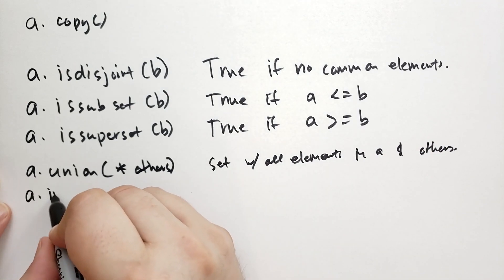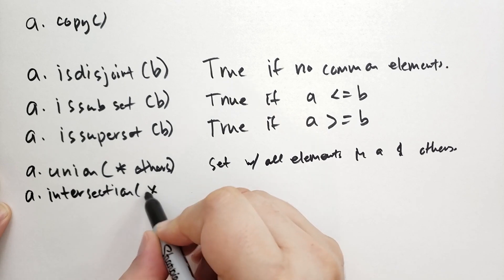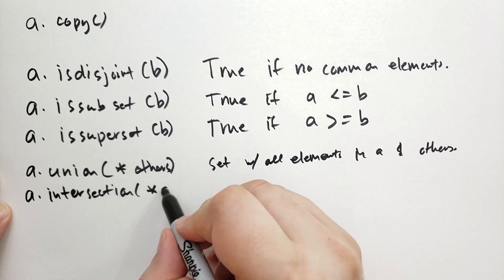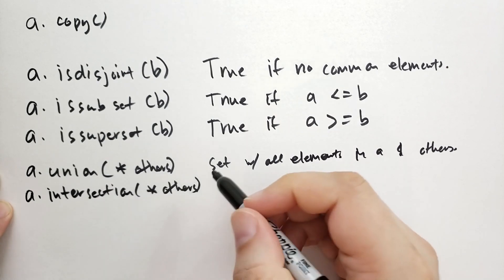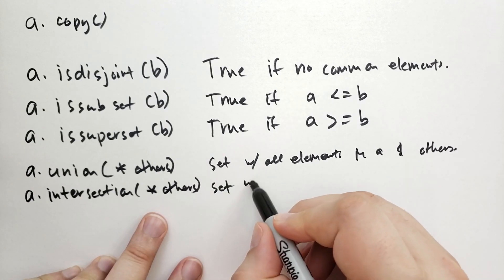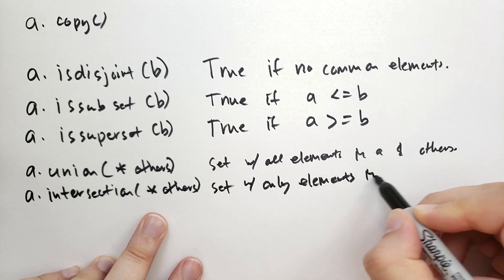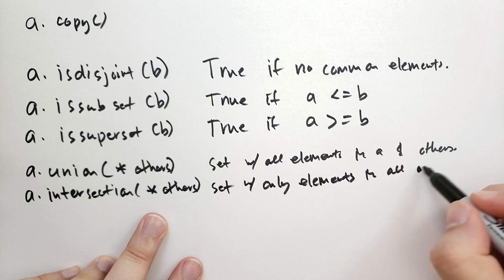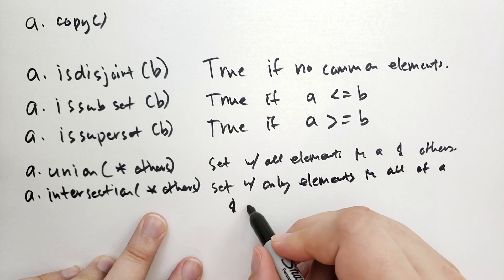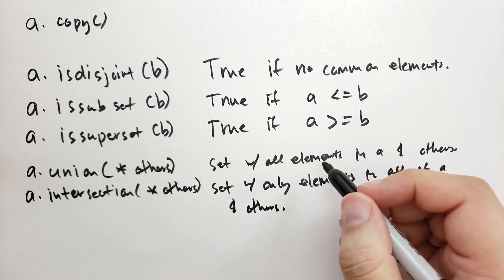Then we have intersection, A dot intersection. And again, we can have a list of others specified as parameters to this method. And this will return the set with only the elements in all of A and the others. OK, so only the elements that are found in each of these sets.